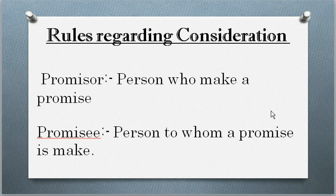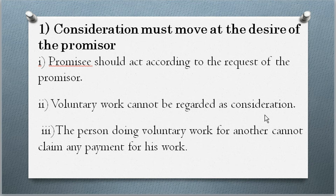First of all, you need to know the meaning of promisor and promisee. The promisor is the person who makes a promise. And the promisee is the person to whom a promise is made. First rule: consideration must move at the desire of the promisor. The promisee should act according to the request of the promisor. In a voluntary act case, it cannot be considered consideration. The person doing voluntary work for another cannot claim any payment for his work.